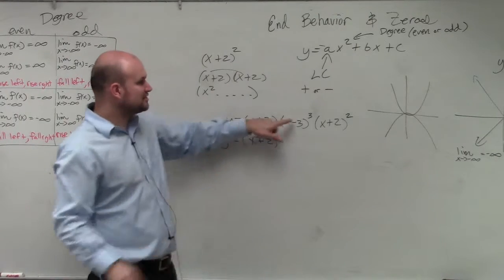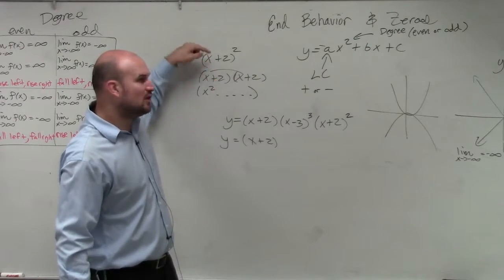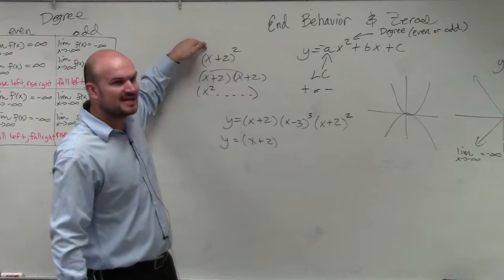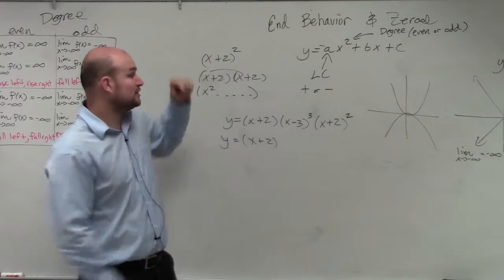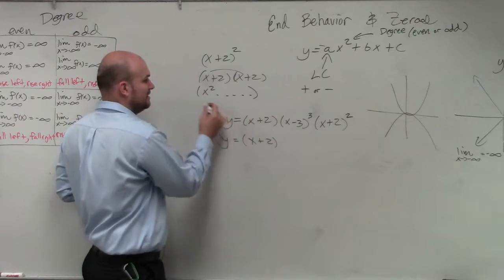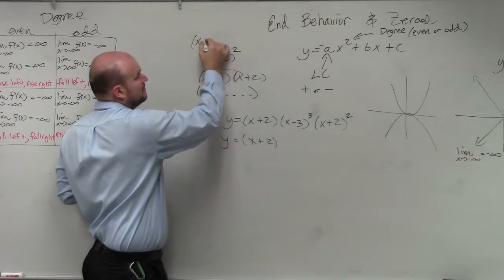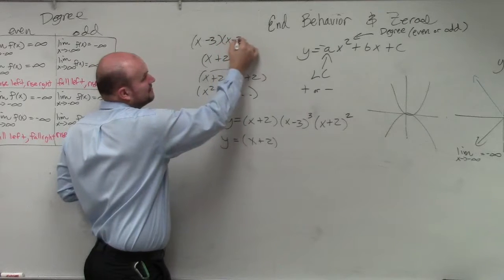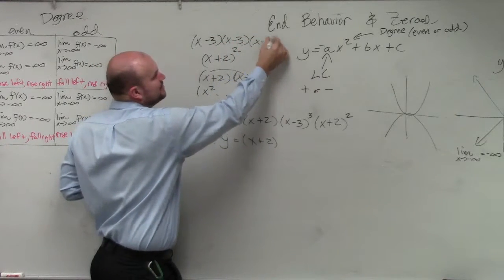x minus 3 cubed is really multiplying this first term by itself three times. So the largest degree, when I expand this out, is going to be what? x, what? x cubed.